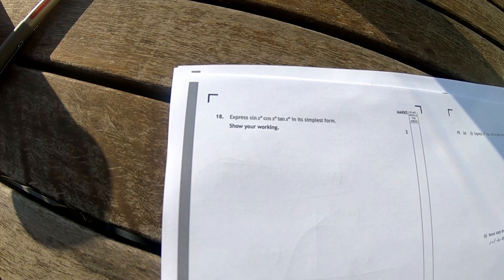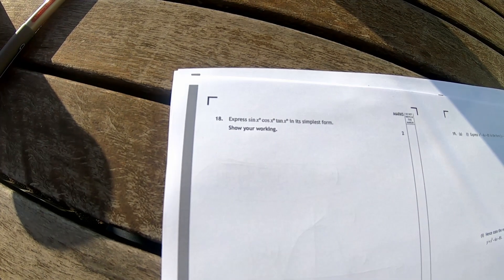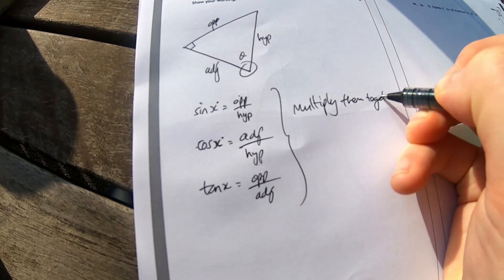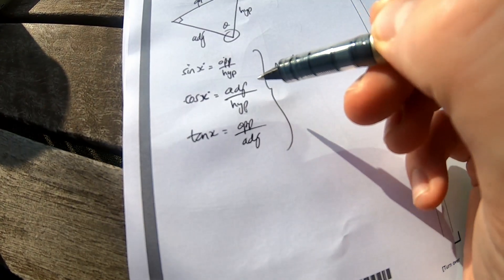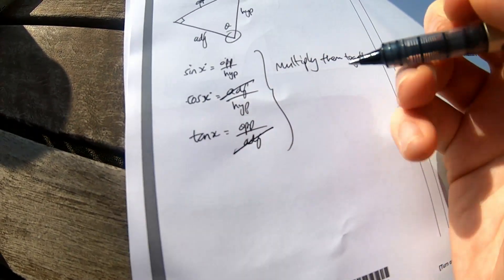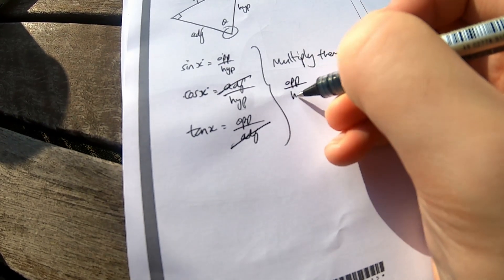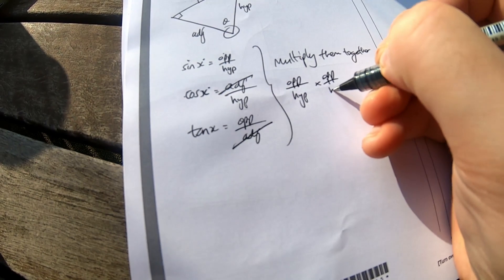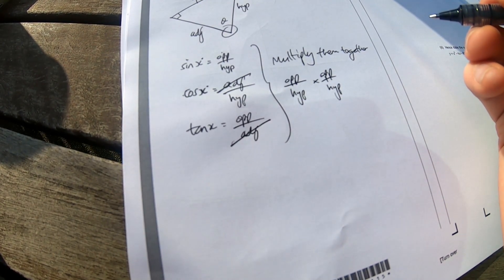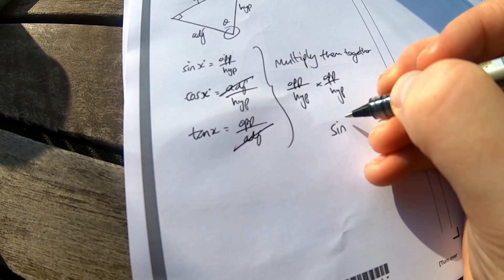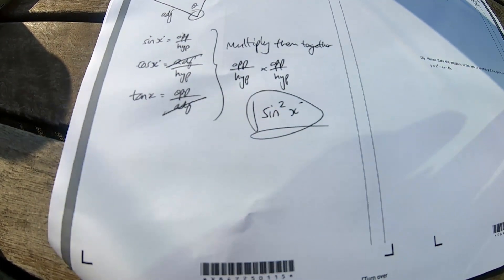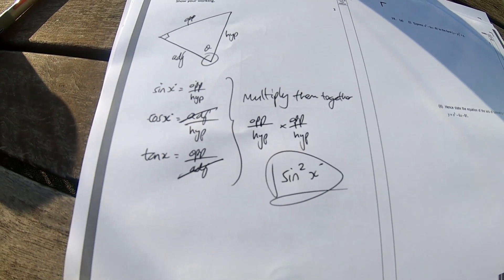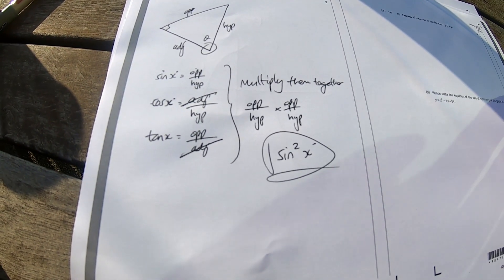Express sin x cos x tan x in its simplest form. Multiply them together. Does anything cancel out? That cancels out with that. So now I've just got op over op times op over op. Oh cool. Sine squared x. I'm going to go with that. That's a nice question. I hope I'm right. That's neat.